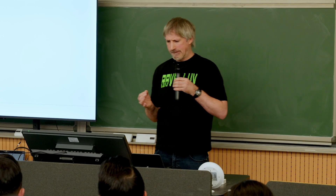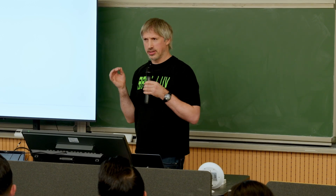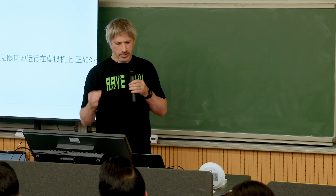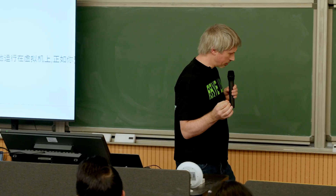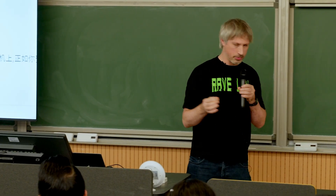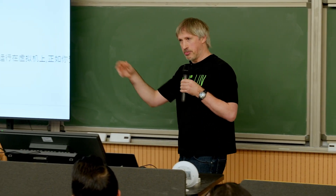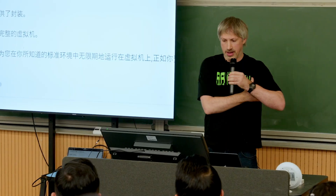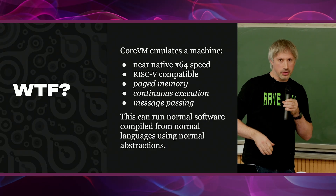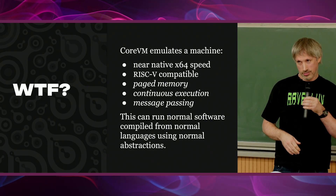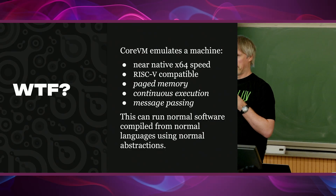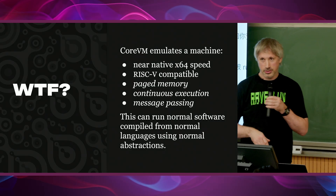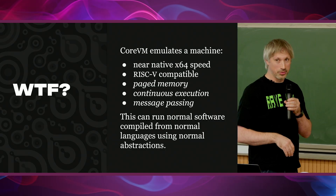CoreVM emulates a machine with Neo-X64 speed. It's RISC-V compatible and therefore targetable by Rust, C, C++, or indeed anything that can target LLVM. It has paged memory, so you get just a regular 32-bit address space. Nothing special going on here — it's normal.